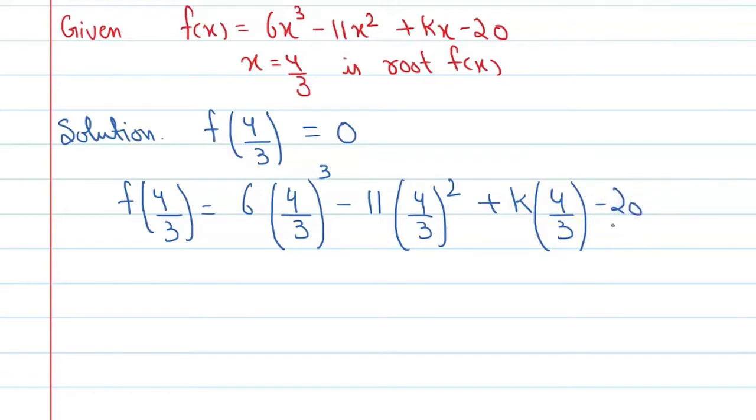Now we can say this is 6 into 64 upon 27 - 4 raised to power 3 means 64 and 3 raised to power 3 means 27 - minus 11 times 16 upon 9, 4 raised to power 2 means 16 and it is 9, plus 4k upon 3 minus 20.